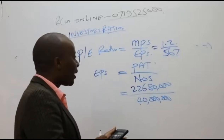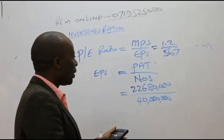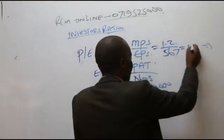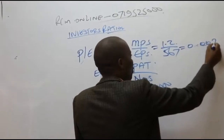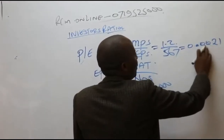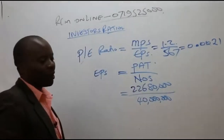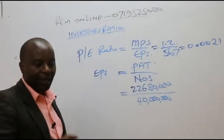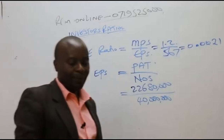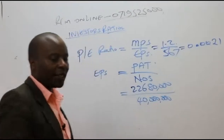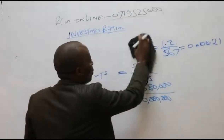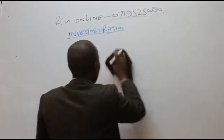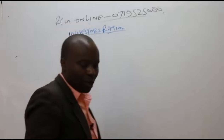So the PE ratio = 1.2 divided by 0.567, which gives approximately 0.00021. The PE ratio is market price per share all over EPS.